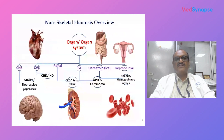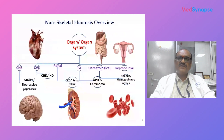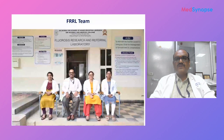Cardiovascular diseases associated with fluorosis include coronary heart disease, ischemic heart disease, renal ischemia, and calculus. Gastrointestinal involvement ranges from celiac disease to cancers. Hematological conditions include various anemias and hemoglobinopathies. Reproductive system effects range from infertility to cervical cancer.